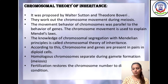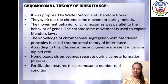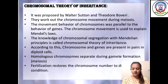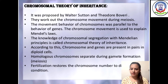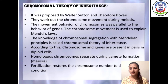According to this theory, chromosomes and genes are present in pairs. During gamete formation, the pairs of chromosomes and genes separate and become haploid in number. But after fertilization, the number of chromosomes is restored. Fertilization means the fusion of male and female gametes — two gametes fuse and become diploid, so the chromosome number remains the same in the progeny.